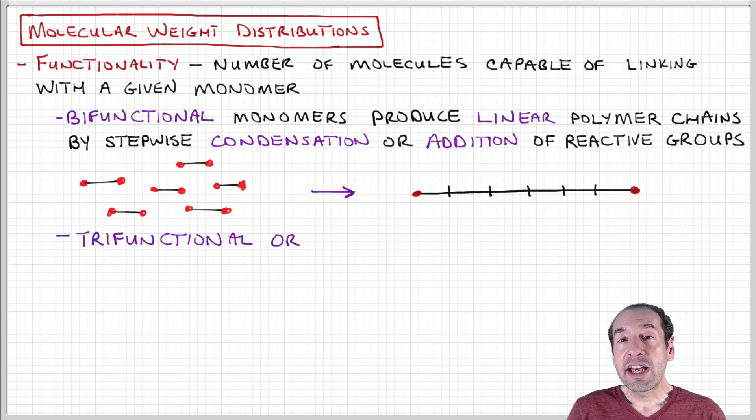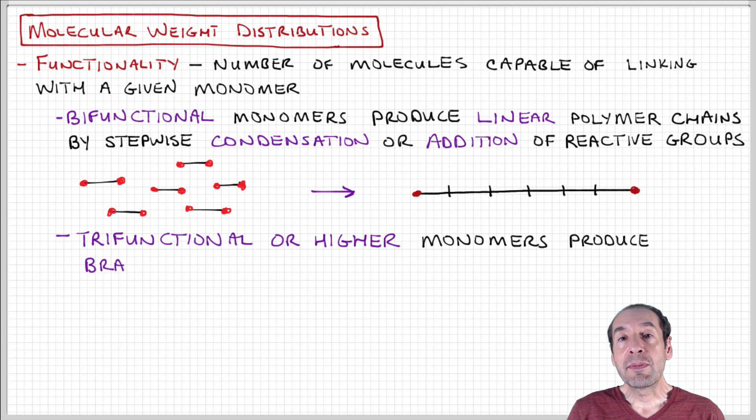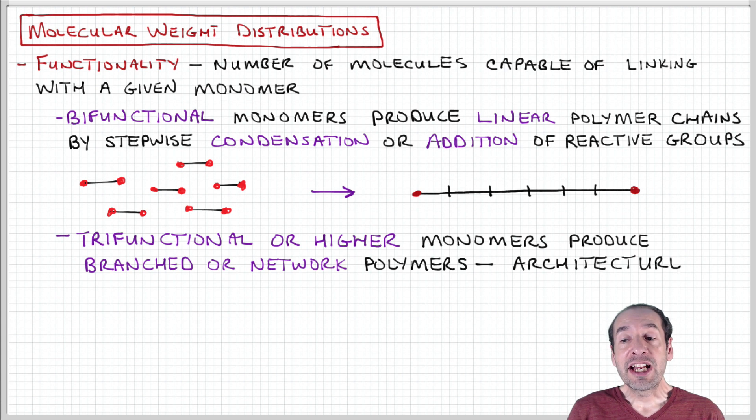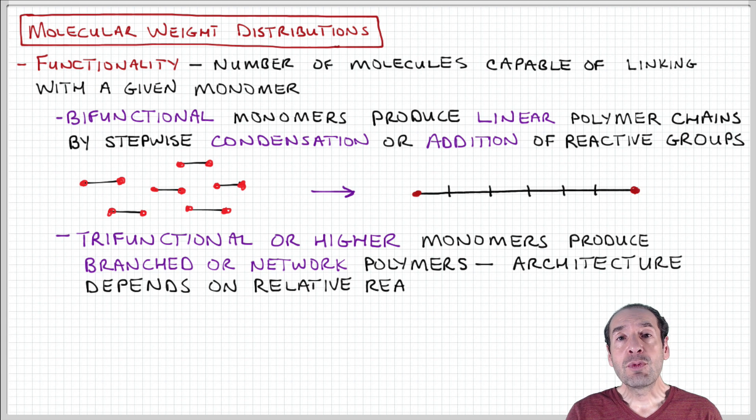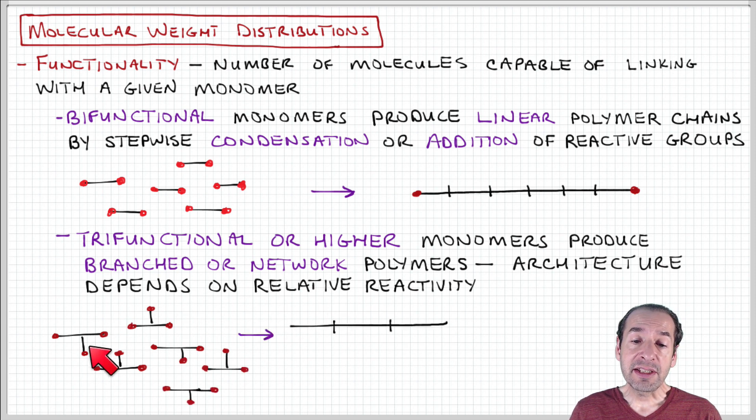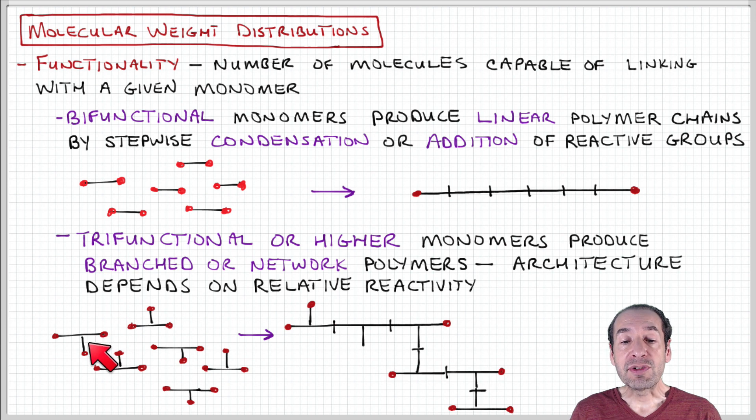Now you could imagine that we could have more than two functional groups per monomer unit. If we have trifunctional or higher degrees of functionality, these types of reactions will generate polymers that have a branched or network architecture. You can see that in this example I've shown here. This is an example of a trifunctional monomer unit.